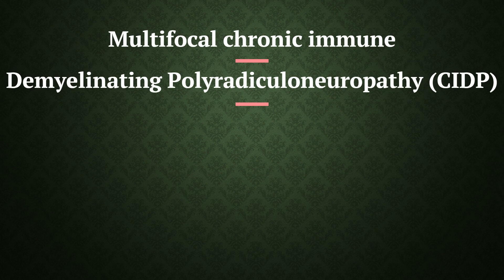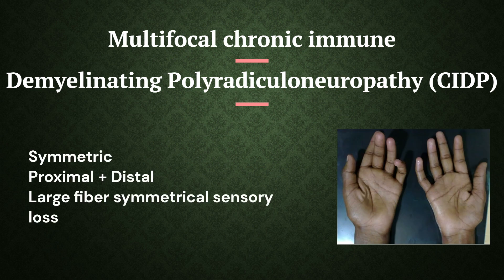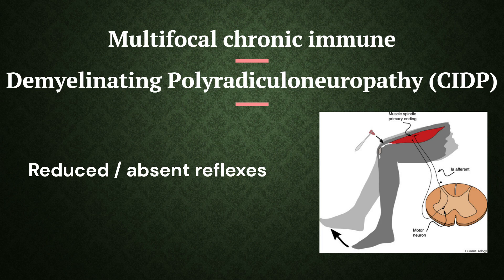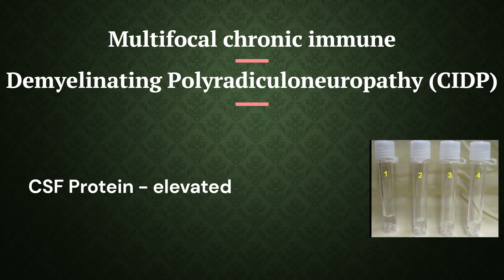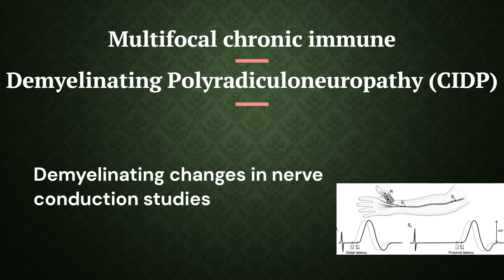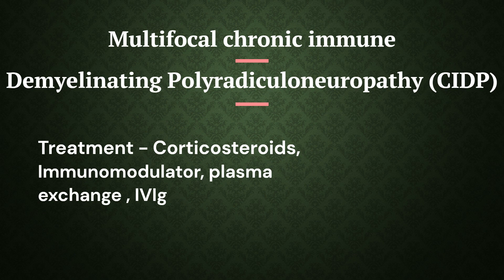The third type is chronic inflammatory demyelinating polyradiculoneuropathy (CIDP). CIDP is characterized by symmetrical proximal plus distal weakness, large fiber symmetrical sensory loss, reduced or absent symmetrical reflexes, and elevated CSF protein. Demyelinating changes are found in nerve conduction studies or nerve biopsy. Treatment includes prednisolone, immunomodulating treatment, plasma exchange, and IVIg.